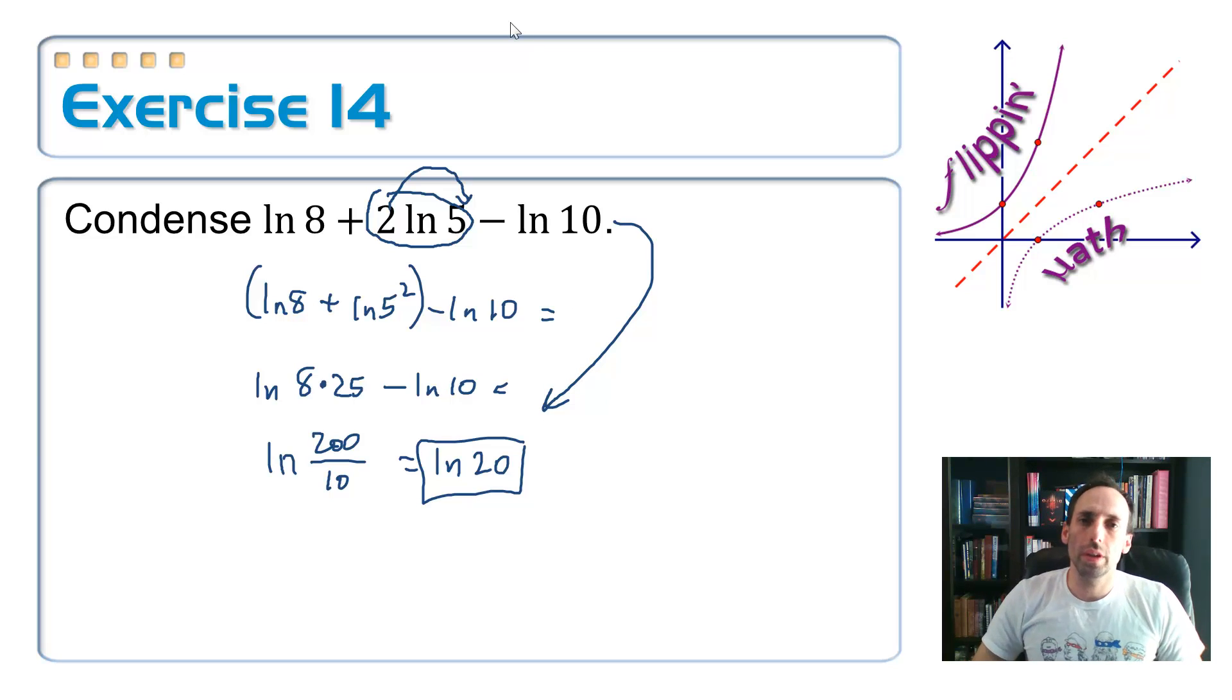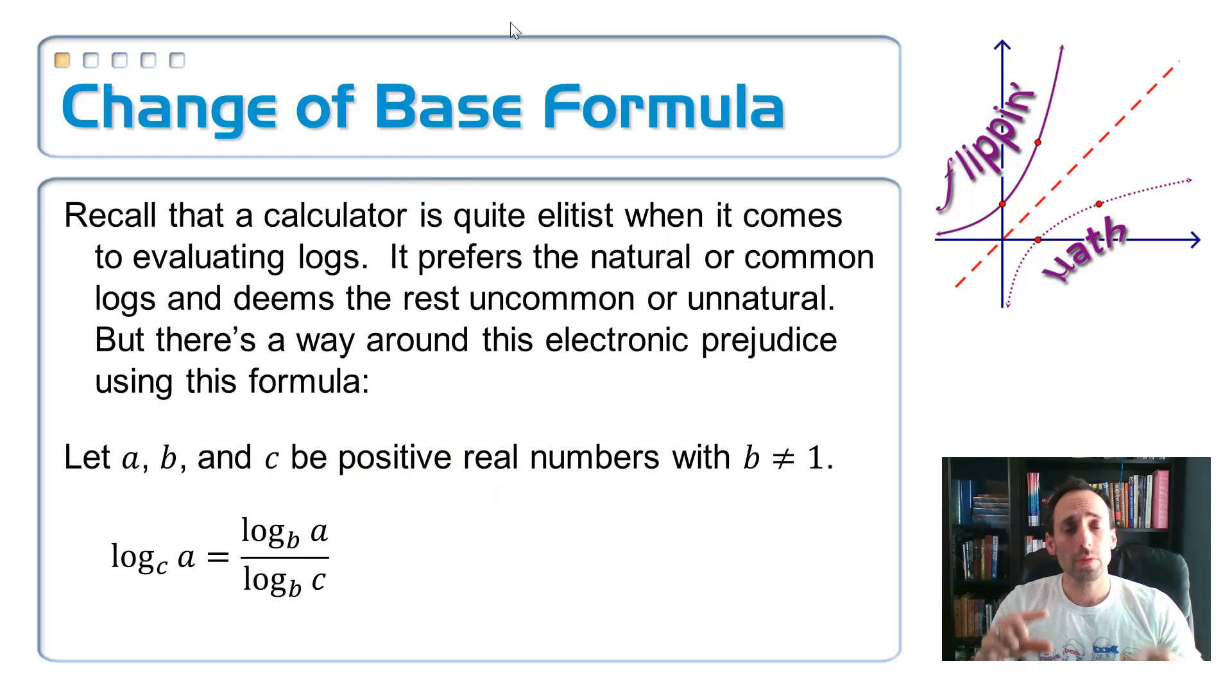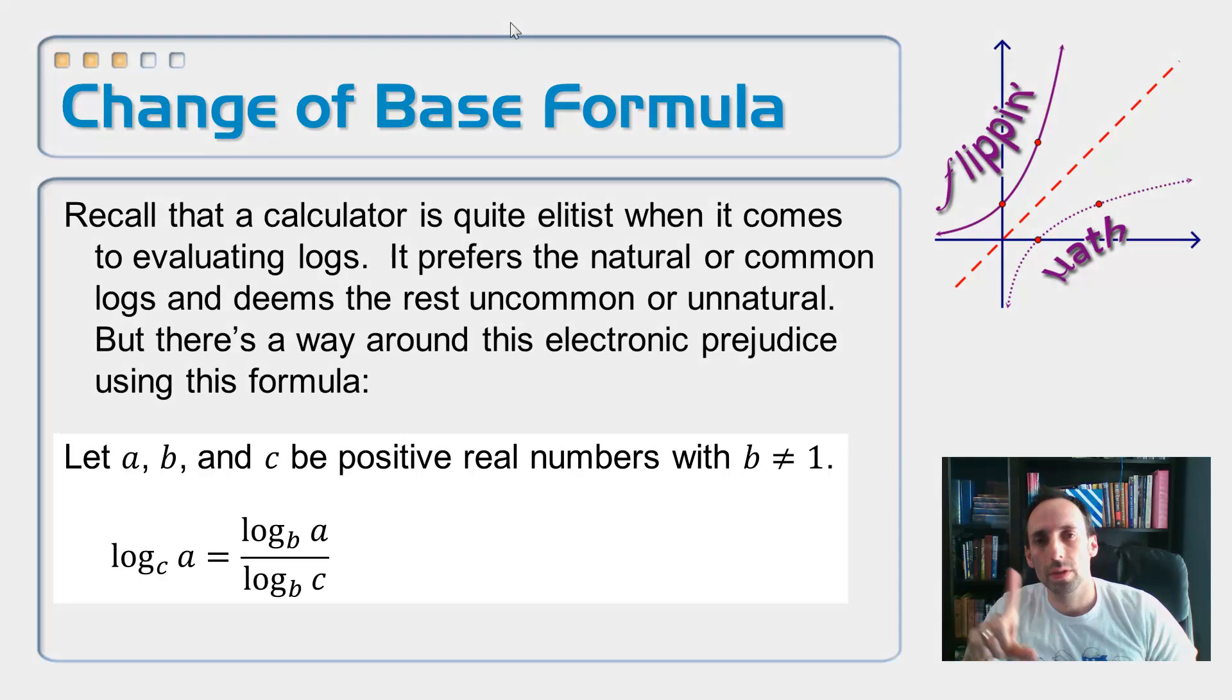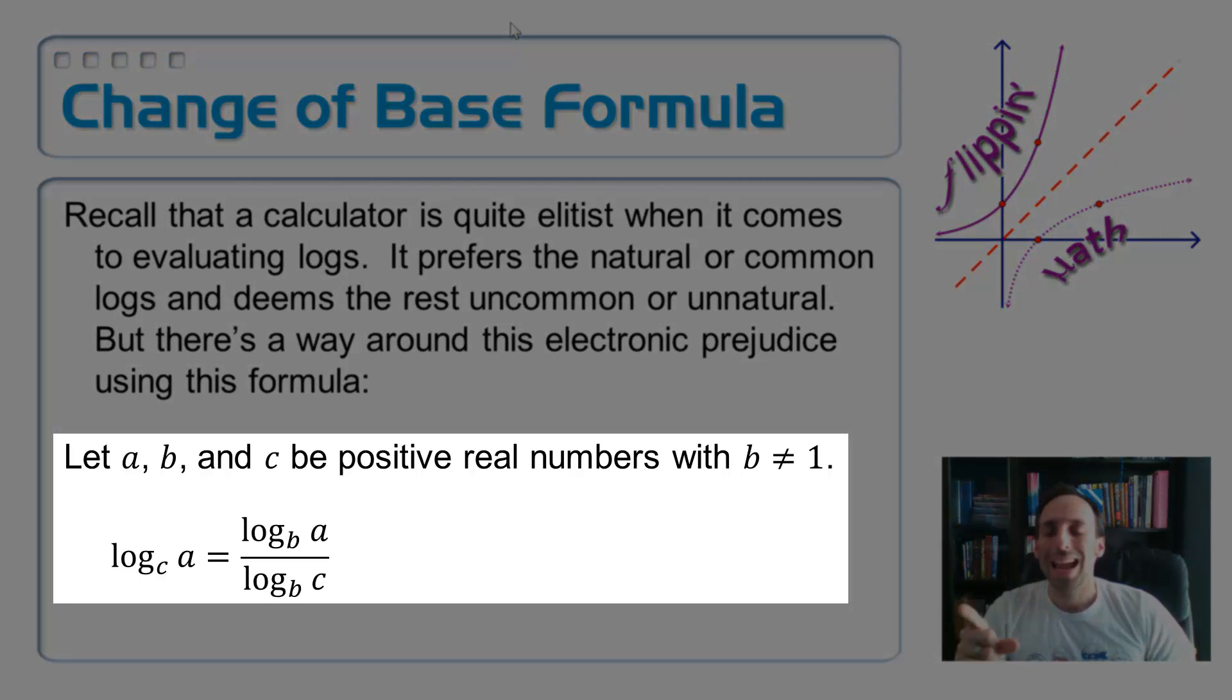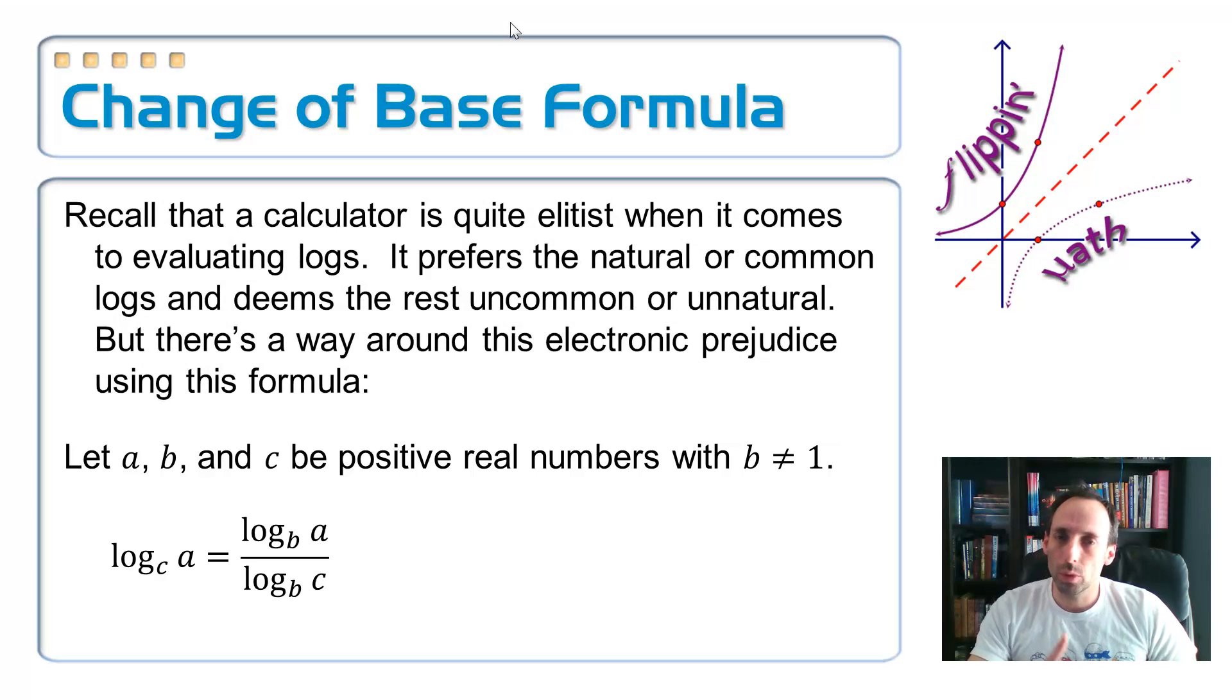All right, there's just one more thing on these logarithms, and that is the fact that when you try to put a logarithm in the calculator, the calculator's pretty elitist. It will only evaluate the log base 10, the common log, or the log base e, the logarithm natural. So, what are we supposed to do about all the rest of them? So, we're going to overcome this little bit of prejudice here by using a change of base formula. This is right down here, down towards the bottom of the screen. A, B, and C are all positive, real numbers, and that B can't be 1, base can't be 1.